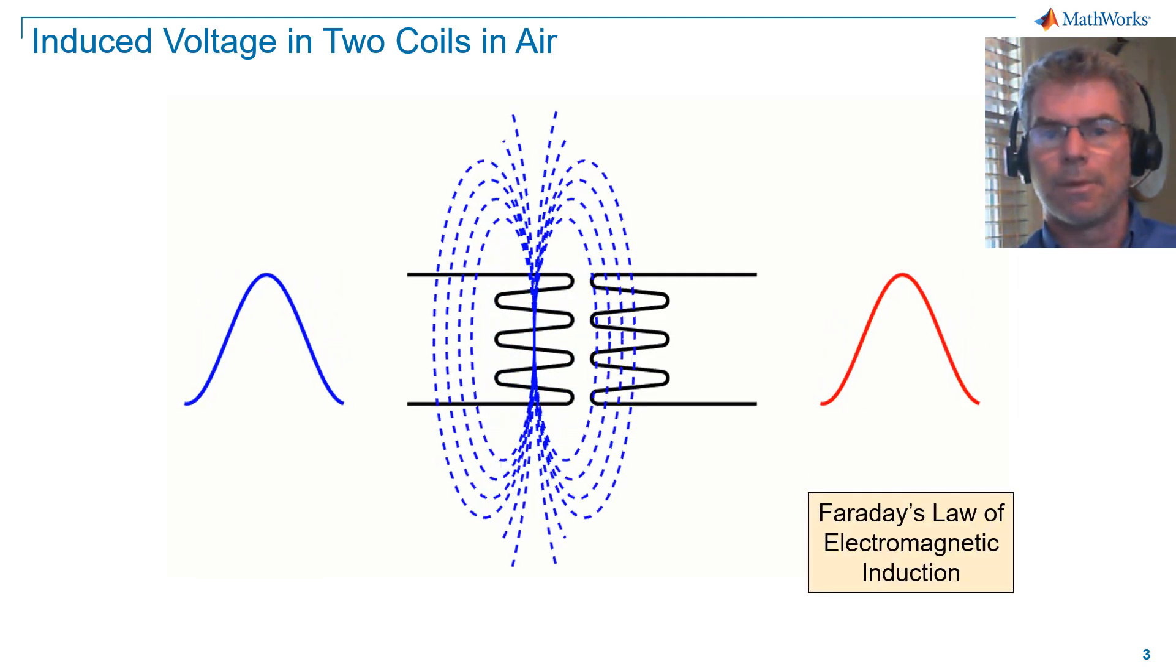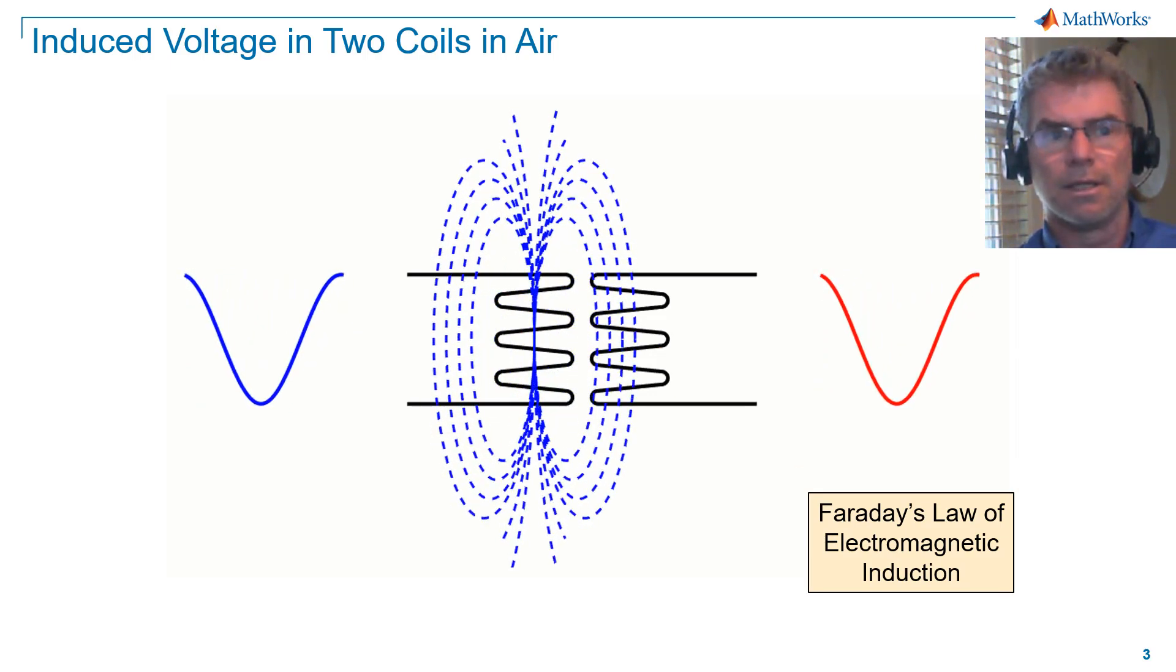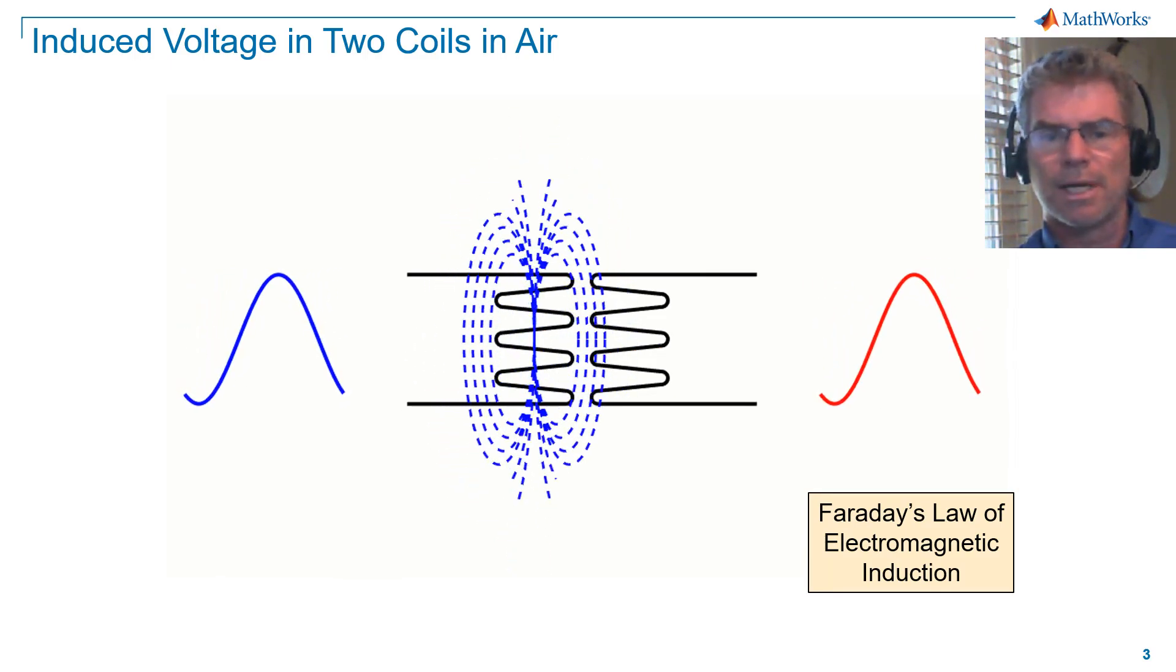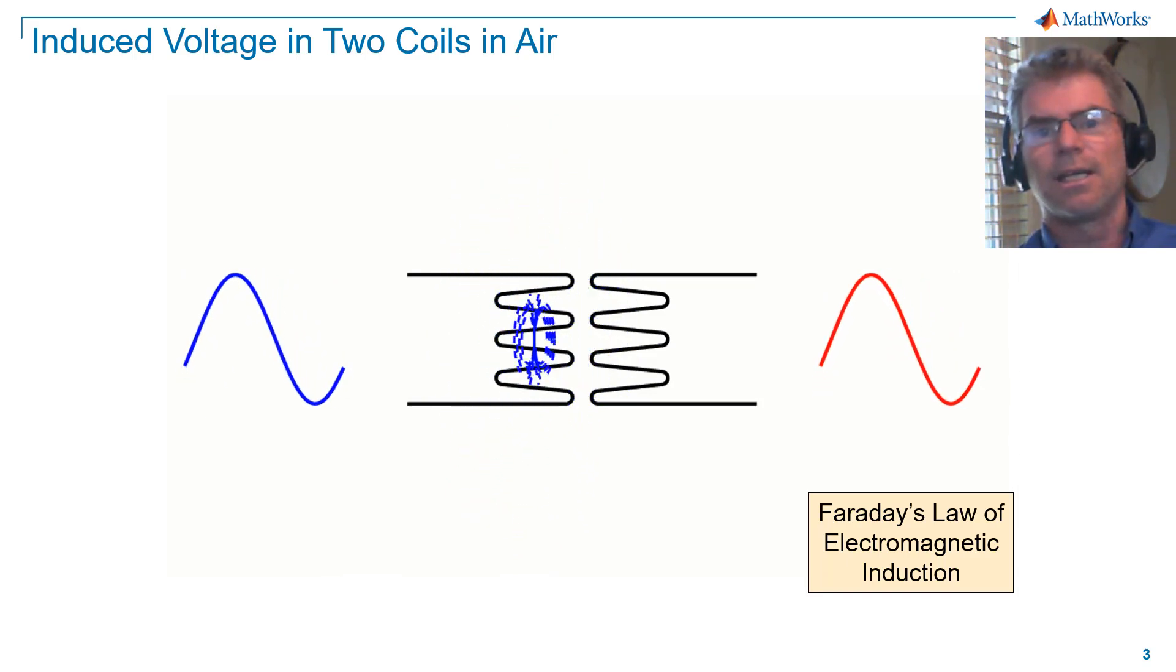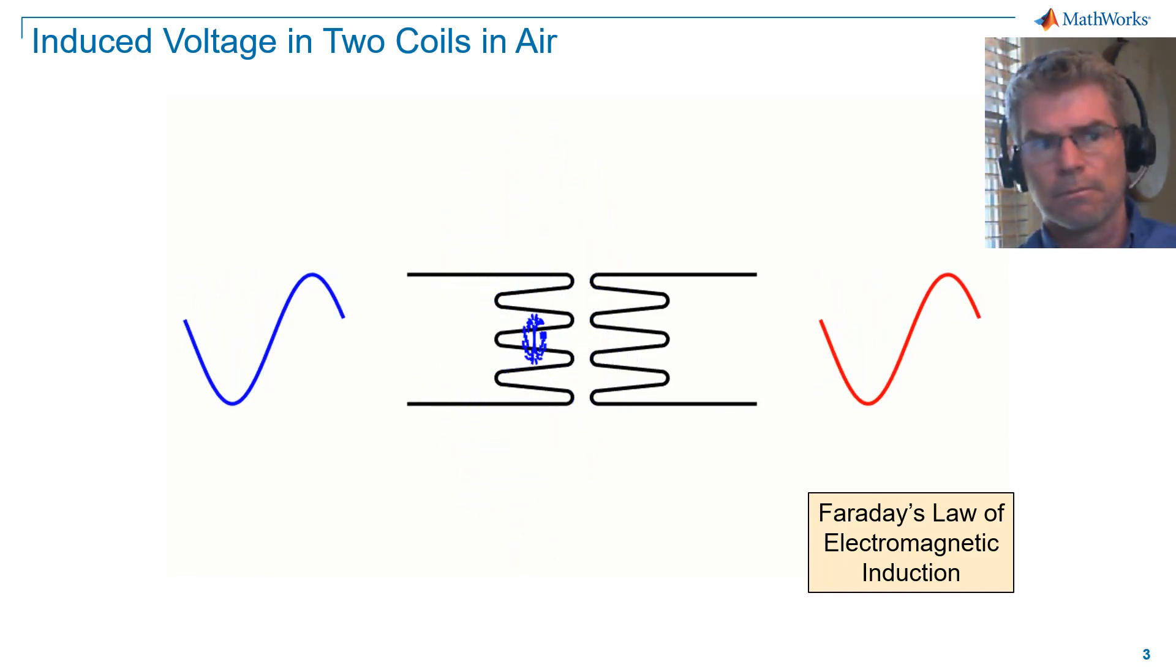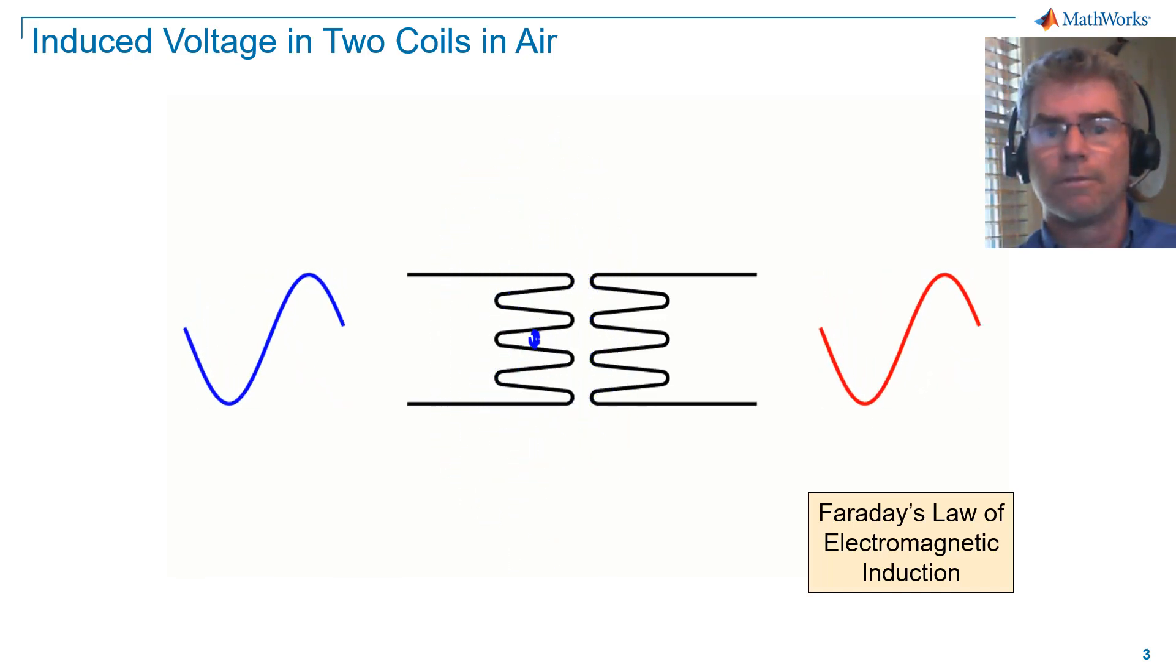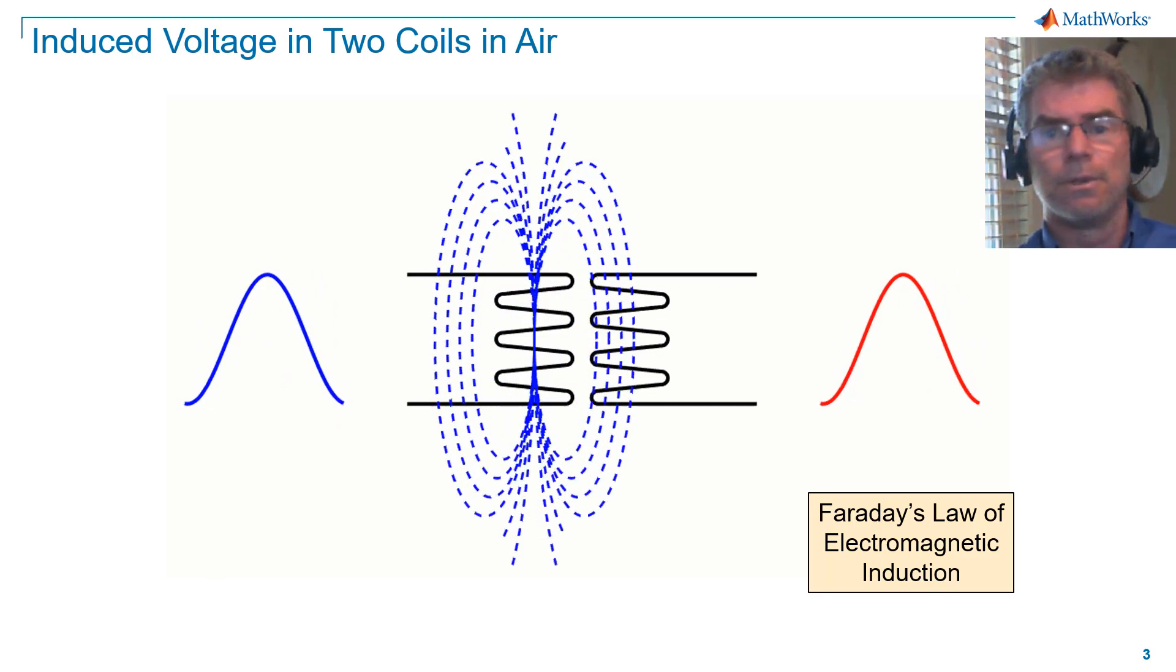We'll not cover the mathematics of Faraday's law here, but numerous sources are available in the literature. Notice that not all the magnetic flux lines are cutting into the second coil. This means the transfer of energy is not efficient. To make the system more efficient, we need a way to direct more of the magnetic flux lines to cut through the second coil.